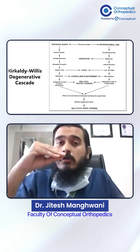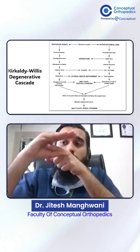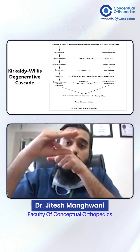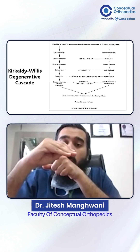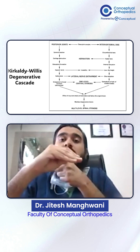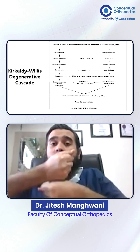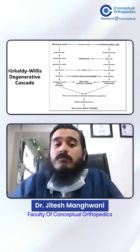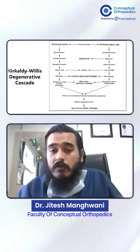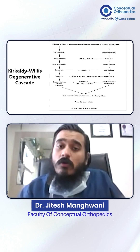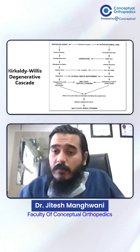As the bones come closer to each other, the nerve exiting that space gets entrapped. The disc space was naturally present, but as it is reduced due to disruption, the nerve becomes entrapped. Similarly, because of instability and the bones sliding on each other due to subluxation, there is an additive effect on nerve entrapment. The articular processes get enlarged in size, and so does the lamina.